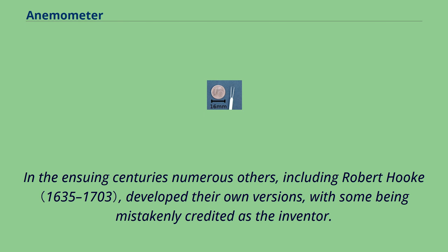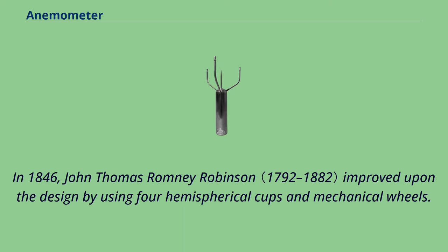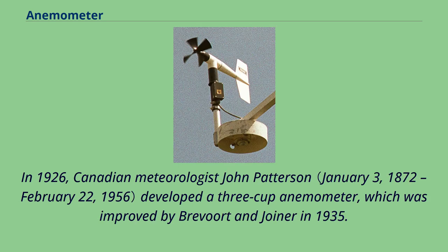In the ensuing centuries numerous others, including Robert Hooke, developed their own versions, with some being mistakenly credited as the inventor. In 1846, John Thomas Romney Robinson improved upon the design by using four hemispherical cups and mechanical wheels. In 1926, Canadian meteorologist John Patterson developed a three-cup anemometer, which was improved by Brevoort and Joyner in 1935.